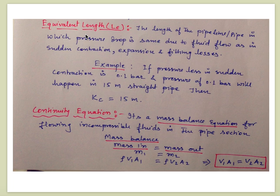Based on those values, we can calculate Kc and directly use the Bernoulli equation: for zero elevation change, ΔP/ρ = K·ΔV²/2.